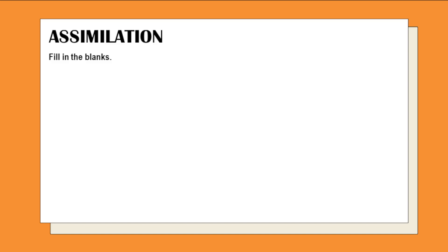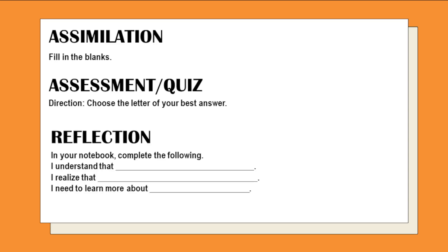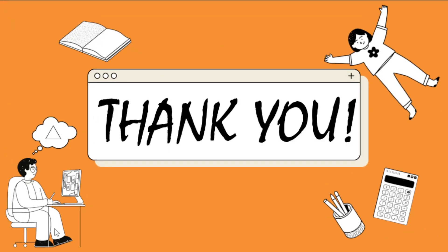For the assessment or quiz, choose the letter of your best answer and fill in the blanks. For the reflection, in your notebook, complete the following: 'I understand that blank. I realize that blank. And I need to learn more about blank.' Learning tasks 1 to 4, the simulation assessment quiz, are to be done on a whole sheet of paper. The reflection goes in your notebook. Thank you for listening.